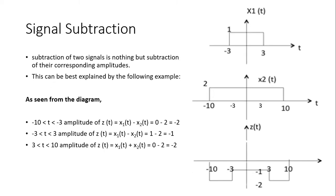Now let's discuss signal subtraction — same as addition but with a little difference. Signal subtraction of two signals is nothing but the subtraction of their corresponding amplitudes. We are again taking care of the amplitude; we are not considering location except to correctly subtract the amplitude of the signals at each region. This can be explained by the following example.